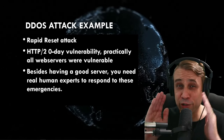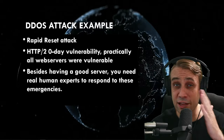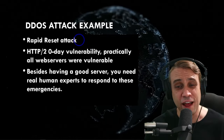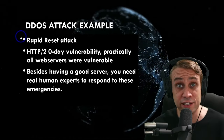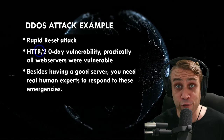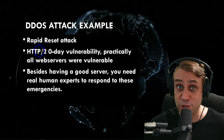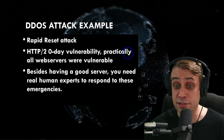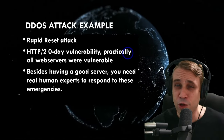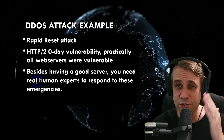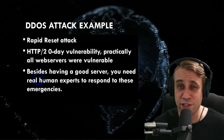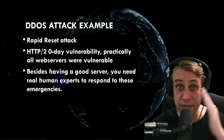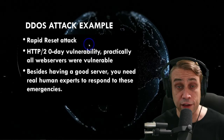Now let's move on to a real-world example of a big DDoS attack. This happened just last month — it was called the Rapid Reset Attack, a massive worldwide DDoS attack. This was a very special one because it was a vulnerability in the HTTP/2 protocol itself, an open protocol that runs on all web servers. Basically everything running HTTP/2 is going to be vulnerable — so practically all web servers. Nothing you could have had installed — any scanner, any firewall — wouldn't have protected you here. This requires real-world engineers to respond to the emergency, find the vulnerability, patch it, and roll out the patch worldwide in time to mitigate the damage.